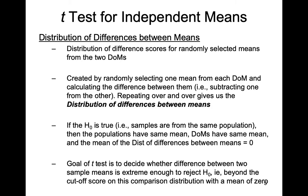The goal of the t-test is to decide whether the difference between any two sample means we get is extreme enough to reject the null hypothesis — that is, whether the observed difference between two sample means is so large that it would go beyond our cutoff score on the comparison distribution, which is the distribution of differences between means.